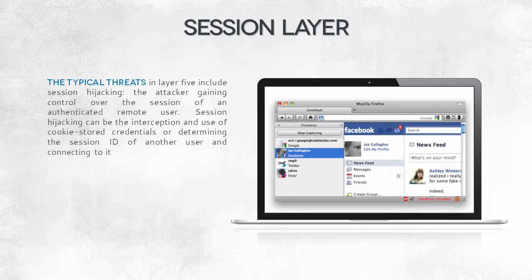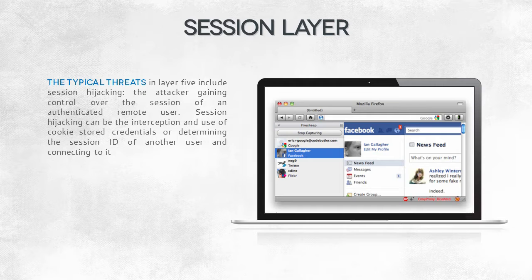If someone managed to intercept the cookie and send it back to the server, he'd be able to impersonate the user perfectly. The attacker wouldn't even have to know the login and password. That's how FireSheep works. The main threats connected to the session layer are identity and credential spoofing. The latter may include Kerberos tickets, NTLM passwords, or web cookies.